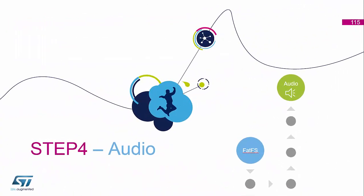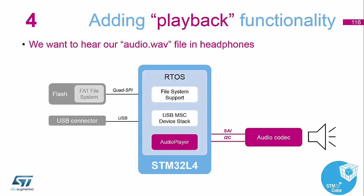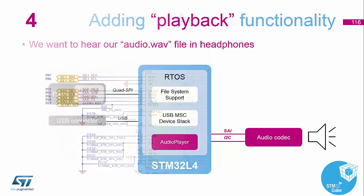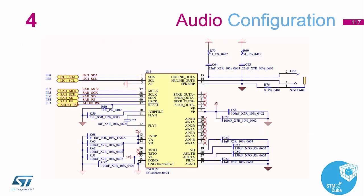That's step 3 done. Now into step 4: we're going to add the audio codec to the system using the SAI peripheral and the I2C peripheral, so that we can control and transmit audio out to the codec and then out via headphones.